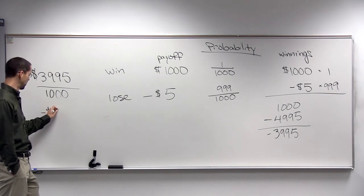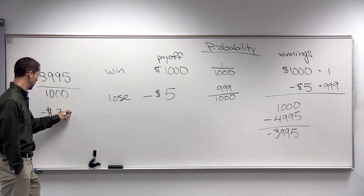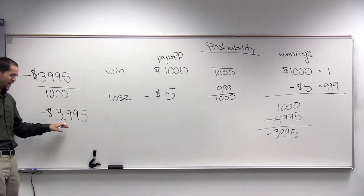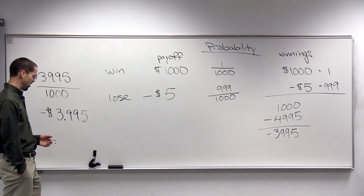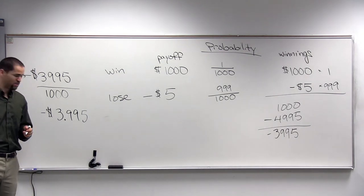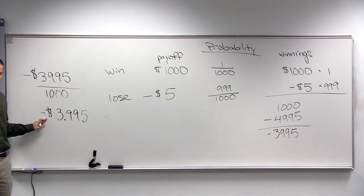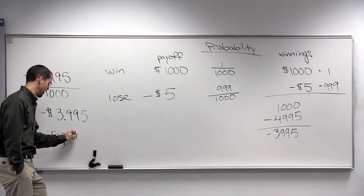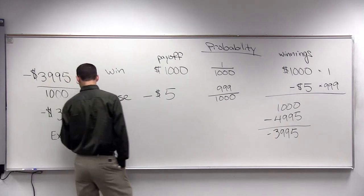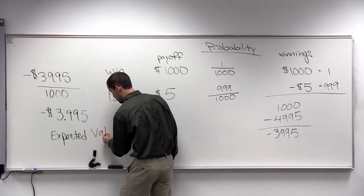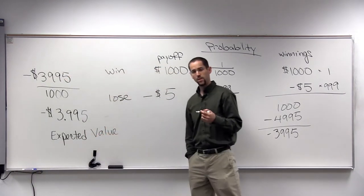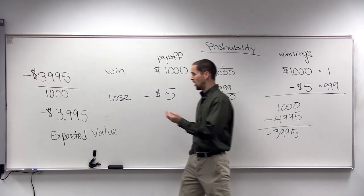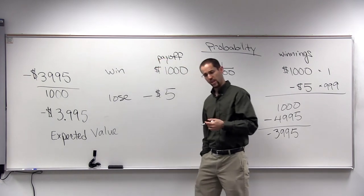On average, we've lost $3.995, or we might just round that up to $4. On average. We call that expected value. If you play over and over and over again, on average, you're losing $4 every time you play.